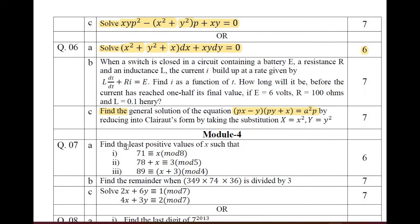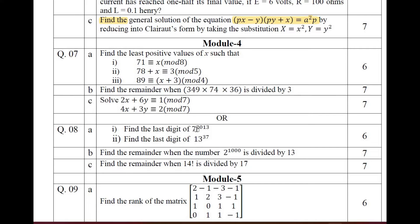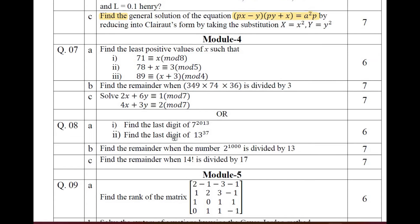Moving on to Module 4 on modular arithmetic. Question 7a: find the least positive values of x such that 71 ≡ x (mod 8), 78 + x ≡ 3 (mod 5), and 89 ≡ x + 3 (mod 4). Question 7b: a remainder theorem problem. Question 7c: a system of linear congruences. Question 8: find the last digit of 7^2013 and 13^37, find the remainder when 2^1000 is divided by 13, and find the remainder when 14! is divided by 70.